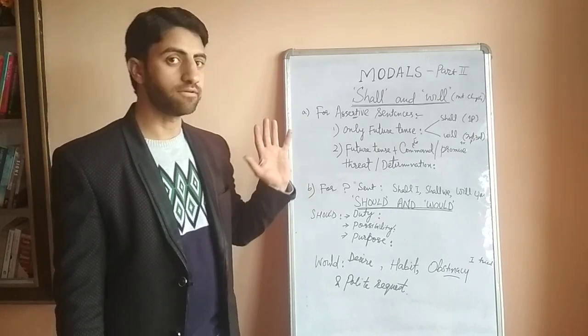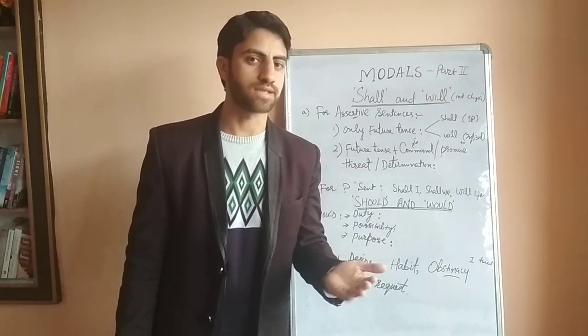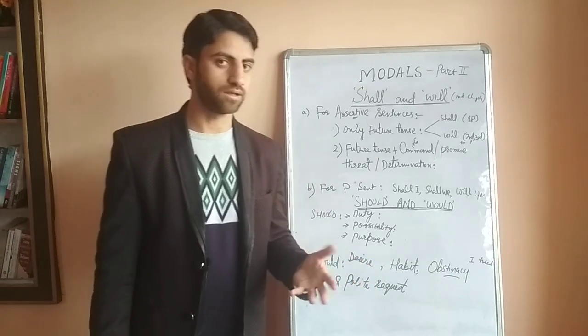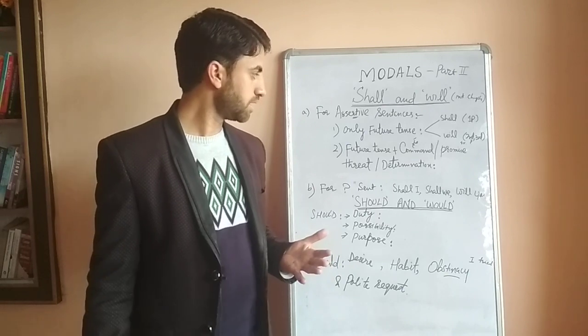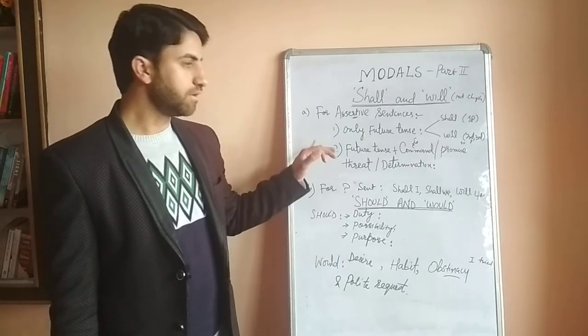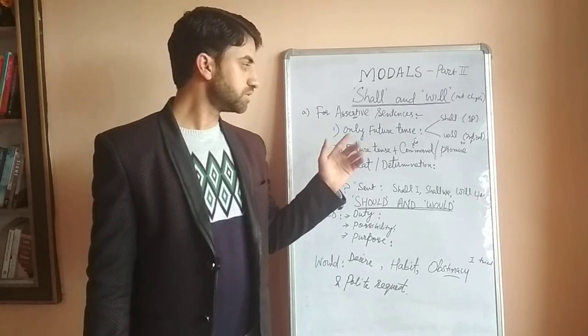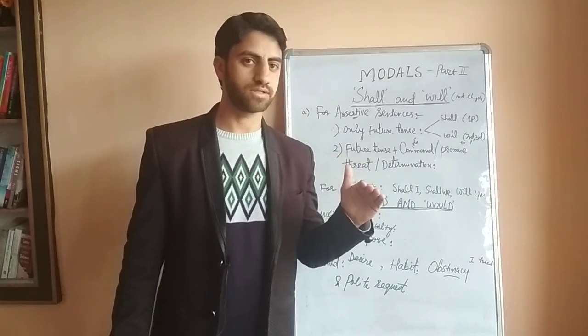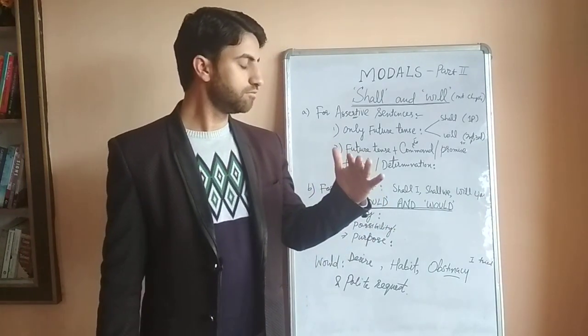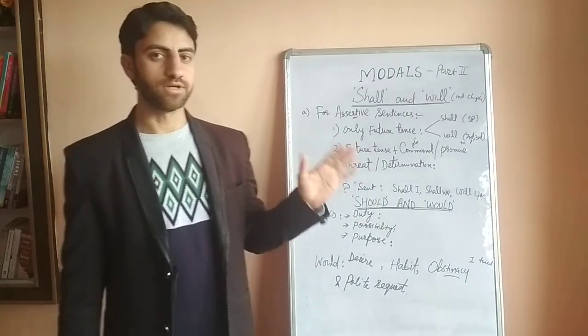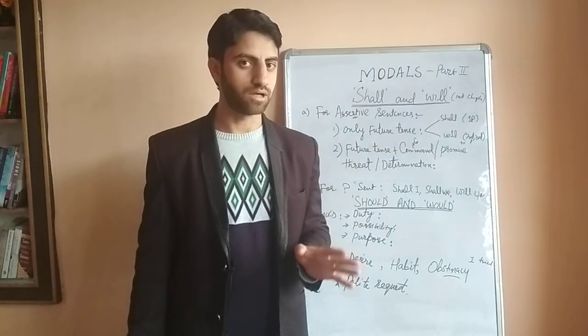In the first case we have assertive sentences. Assert means to say something - koi baat kehna, koi baat zhor se kehna, like the prime minister asserted himself. Here we have two cases when we are going to talk about future tense. In future tense we make use of shall with the first person and will with the second and third person.